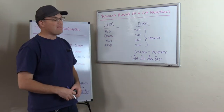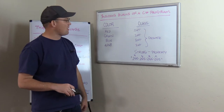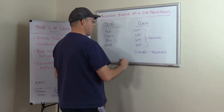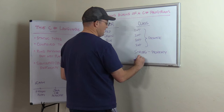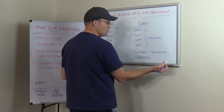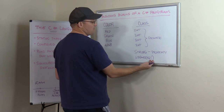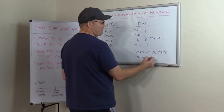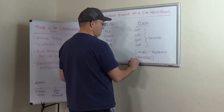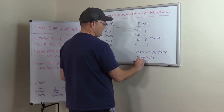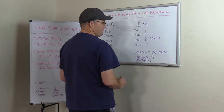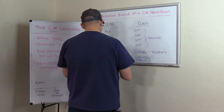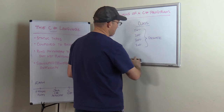A method allows you to do something with the data inside an object. So on our color class we might have a lighten() method — represented with parentheses, which is the convention in object-oriented programming, and also because you can pass information to a method inside those parentheses. We might also have a darken() method. These methods manipulate the internal values to make the color lighter or darker.